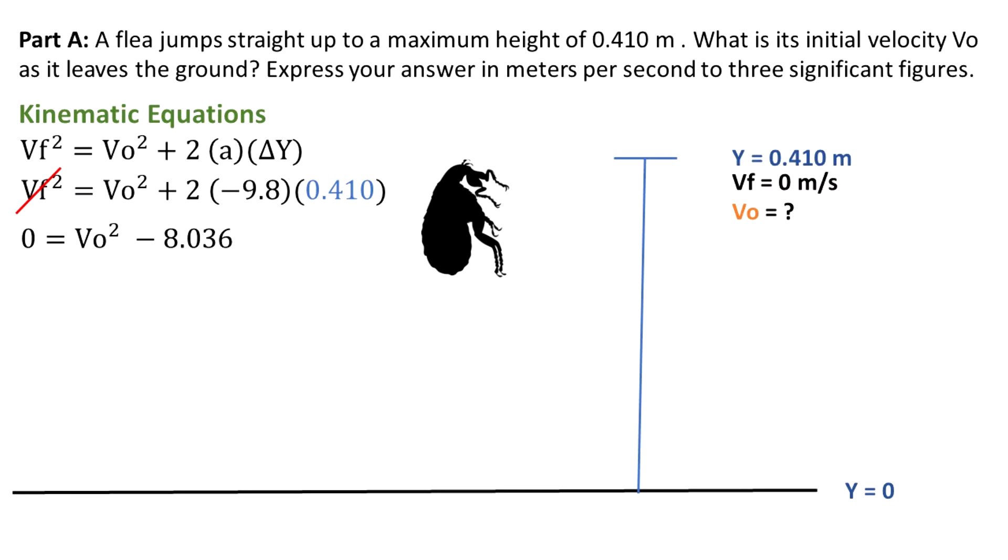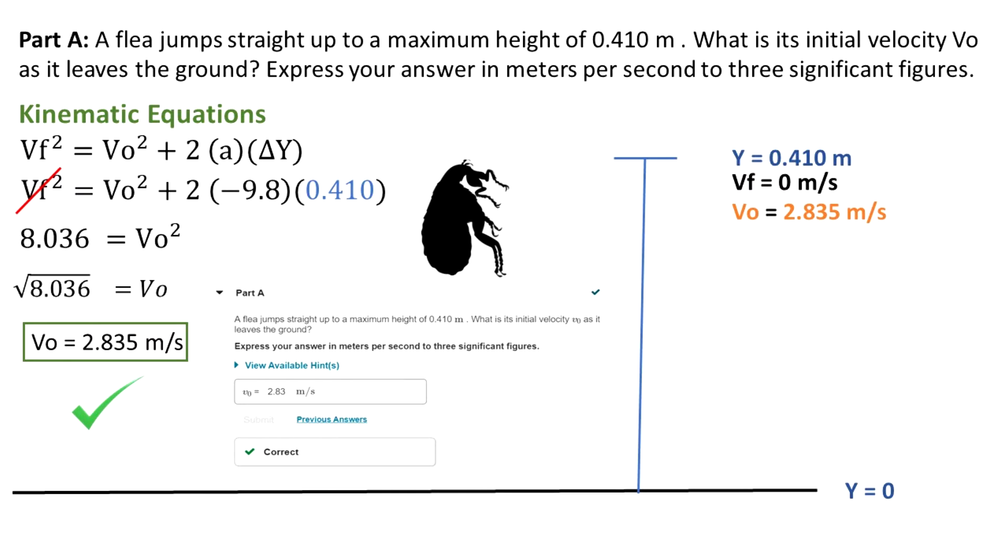Then we do some arithmetic. V final squared is equal to zero, and that's equal to V initial squared minus 8.036. That's the result of that multiplication. We do some more arithmetic, solving for V0, that's the initial velocity. And we found that the flea had a 2.835 meters per second initial velocity in the moment that it jumped from the floor. And we can see that our calculations were right.